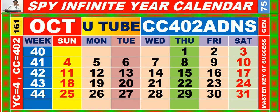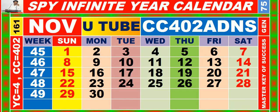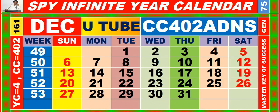Calendar for the month of October, having calendar code equal to 402. Calendar for the month of November, having calendar code equal to 402. Calendar for the month of December, having calendar code equal to 402.